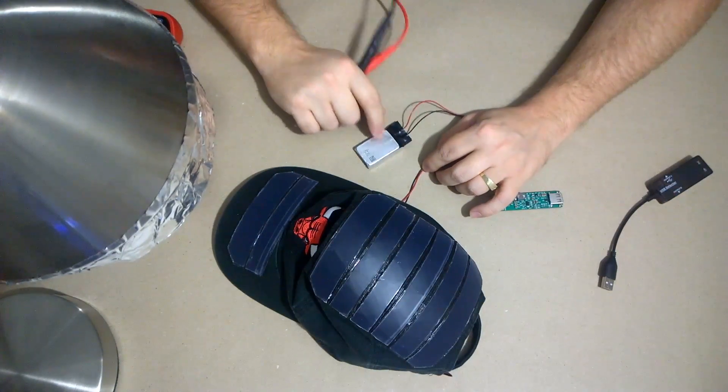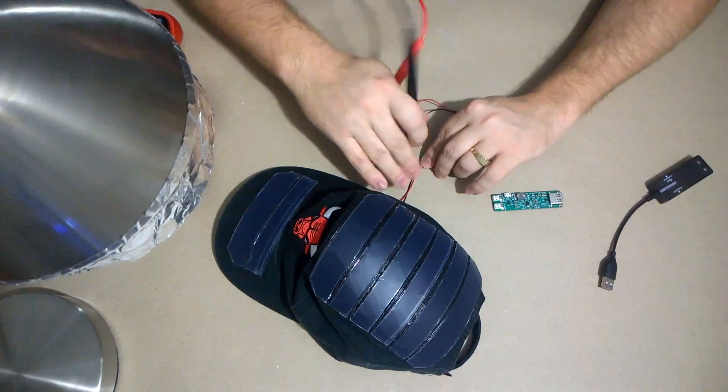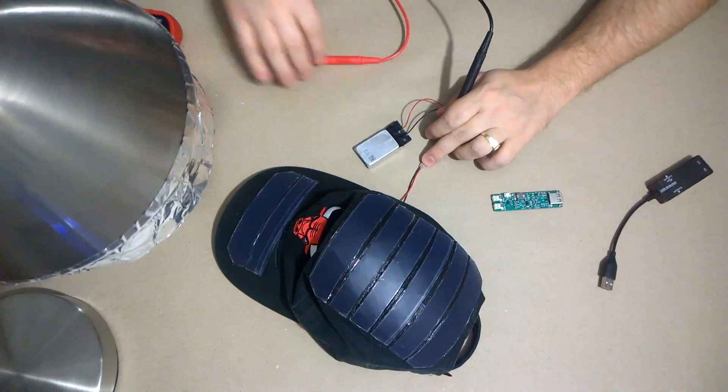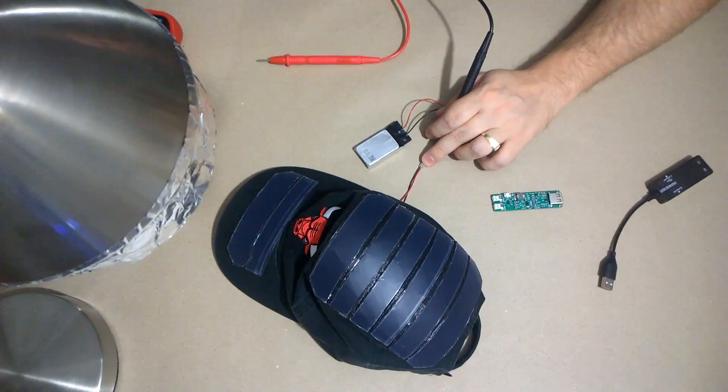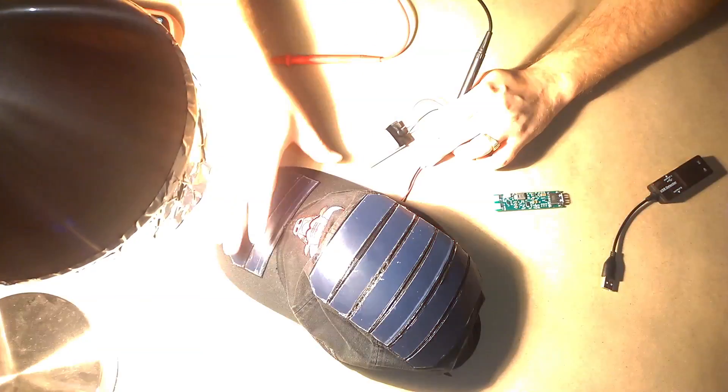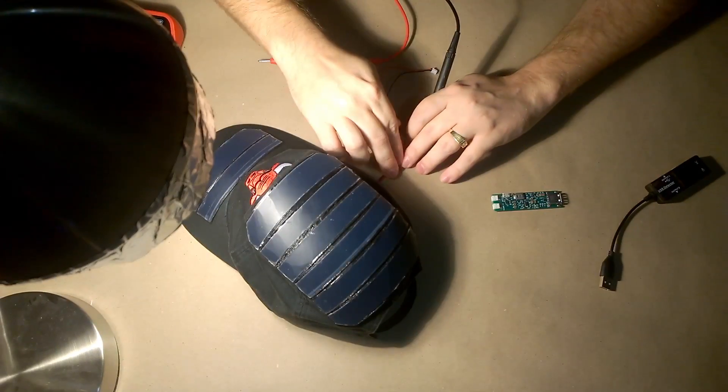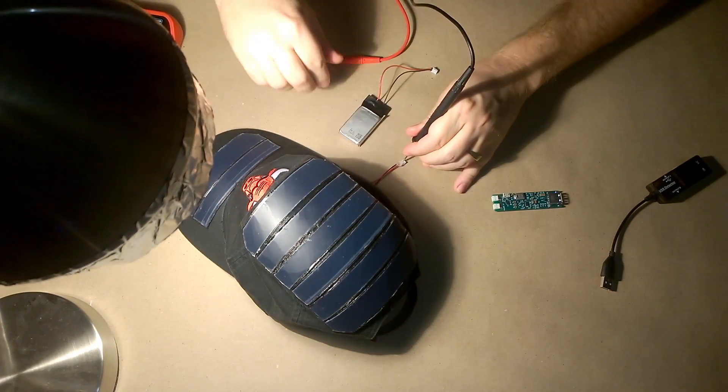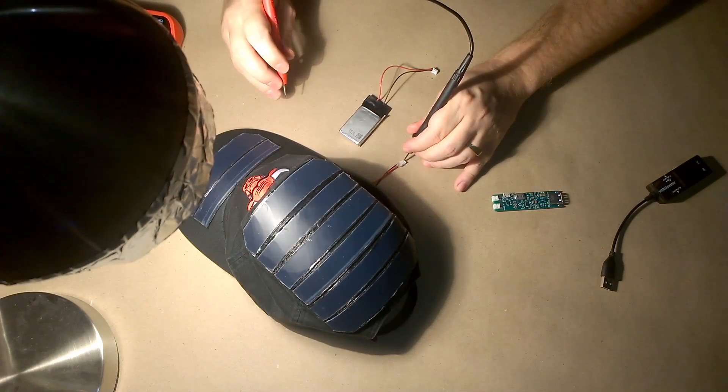Okay. So the first thing that I'm going to do is I'm going to turn on my artificial light source here. Now, this is not going to create as much power as the sun would. Not even very close. But it's useful for testing. So what we're going to do is I'm just going to look at the voltage I'm getting off of this solar cell right now.